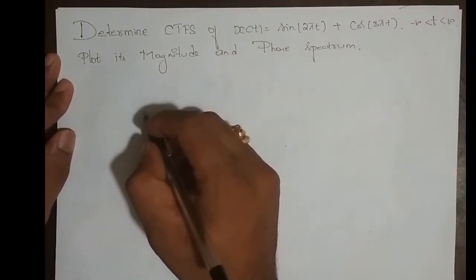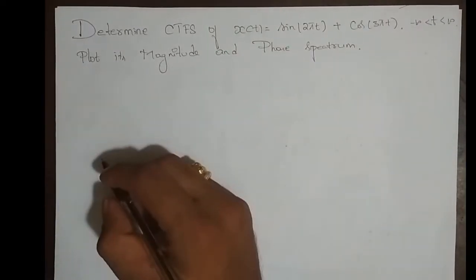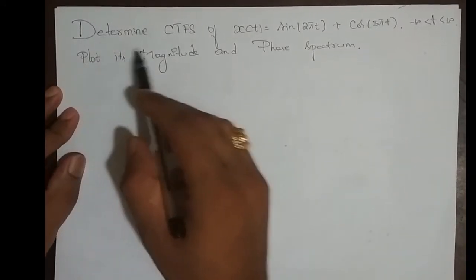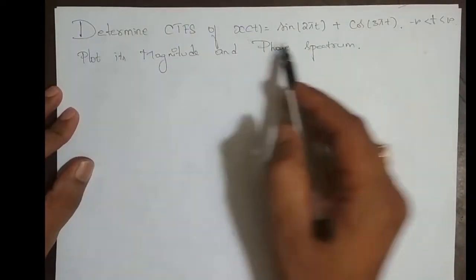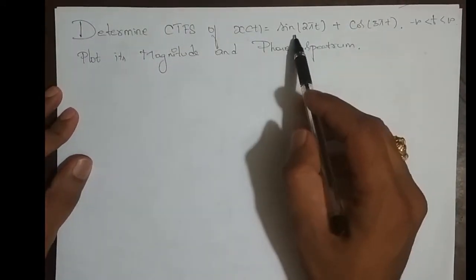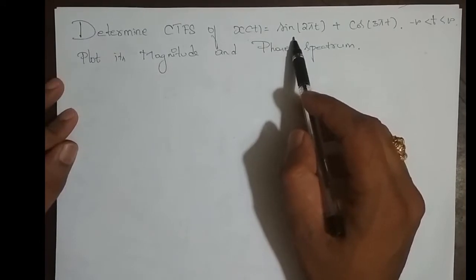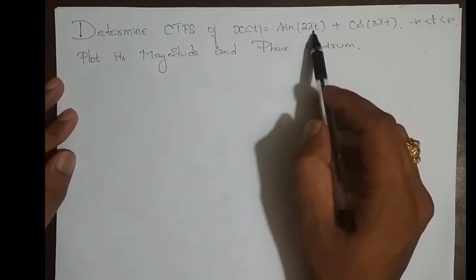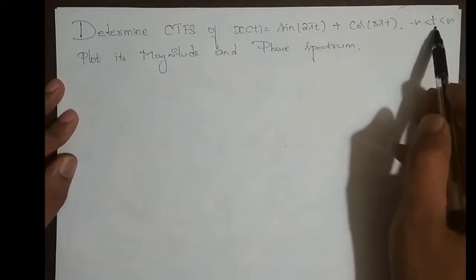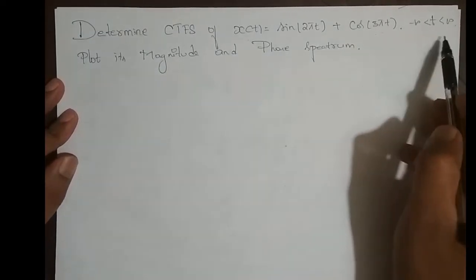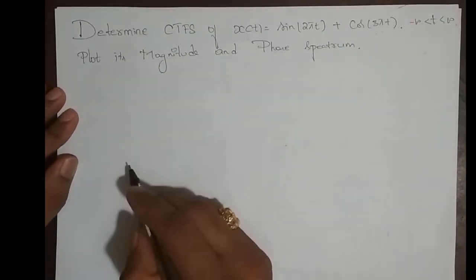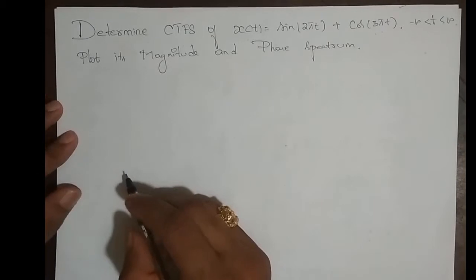We shall take one more problem on continuous time Fourier series. The problem is: determine the continuous time Fourier series of x(t), which is a sum of two periodic signals — sin(2πt) and cos(3πt) — where t varies from minus infinity to infinity. We also need to plot its magnitude and phase spectrum.